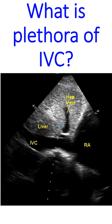Himmelman and colleagues described IVC plethora as an important echocardiographic sign in cardiac tamponade as well. They defined it as less than 50% decrease in inferior vena caval diameter on inspiration or with sniff.